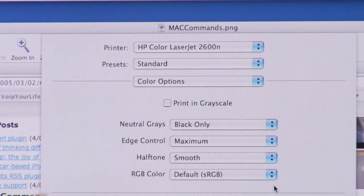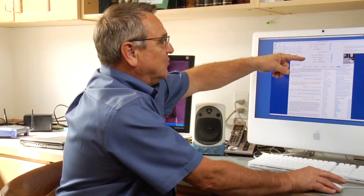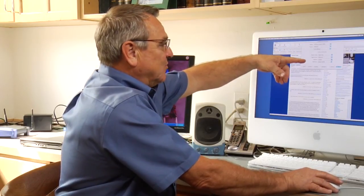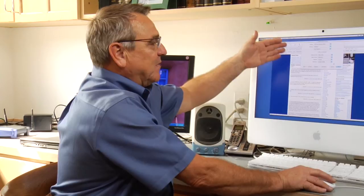We can print in grayscale, we can do black only, we can do halftone smooth, and just the simple RGB—red, green, and blue—settings for color. So if we wanted to change the contrast on this document, we would manipulate these settings, and then we can make the document lighter or darker.